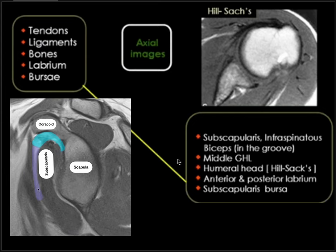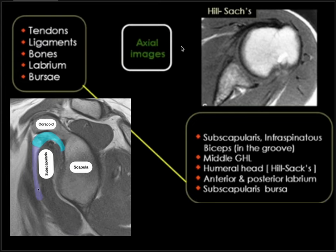On axial sections: we can see the subscapularis muscle, tendon, and insertion; the infraspinatus muscle, tendon, and insertion; the biceps between them; and the transverse humeral ligament. Bone-wise, we can see all the bony anatomy. Labrum-wise, we can see anterior and posterior labrum, with the middle glenohumeral ligament in the anterior labrum.